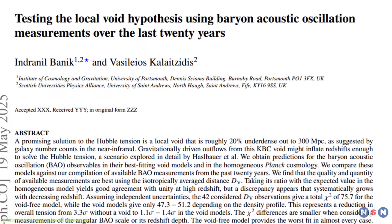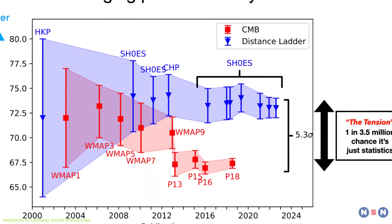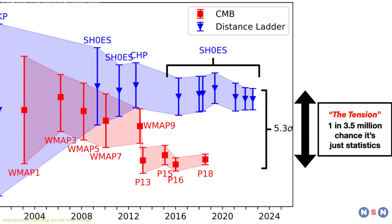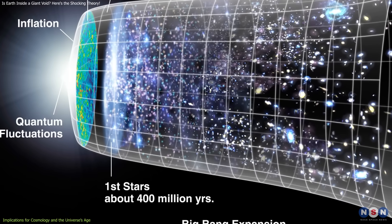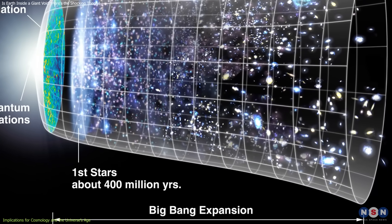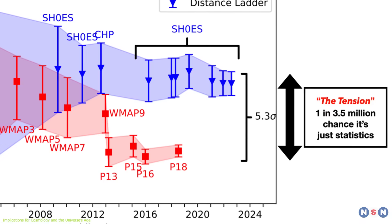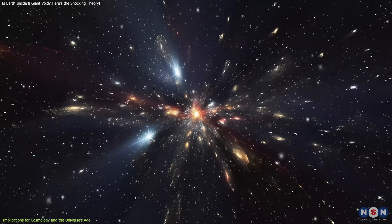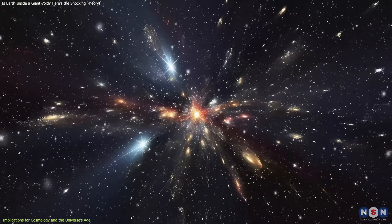Another important implication of this theory is its potential to clarify the true age of the universe. The discrepancy between early and local universe measurements has been a major source of uncertainty in estimating the universe's age, currently thought to be around 13.8 billion years. Resolving the Hubble Tension could lead to a more accurate determination of the universe's age and help refine models of its expansion history.